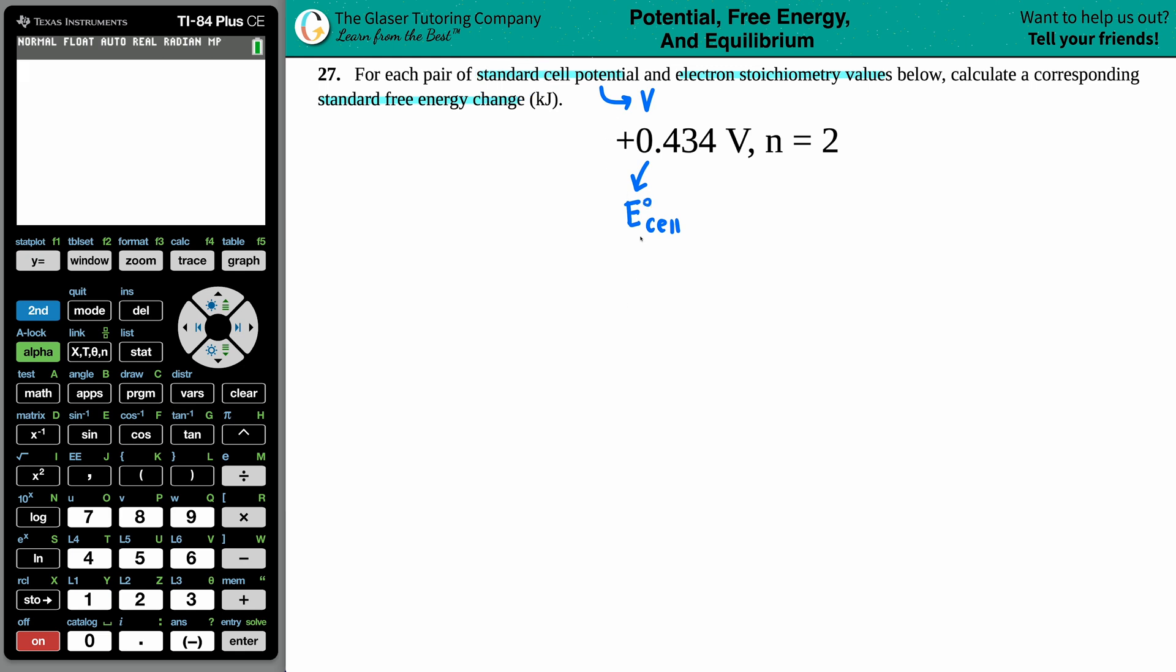Now since we are talking about a standard cell potential, we're talking about an E° cell. Anytime that you see that degree sign in the upper right hand corner, that means that you're doing standard conditions. The n value then has to go along with this electron stoichiometry.